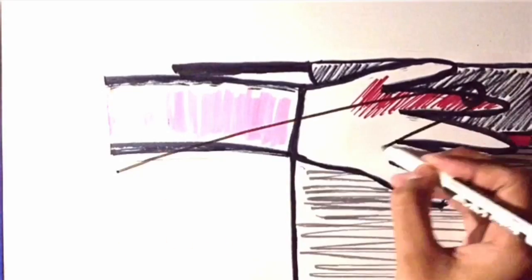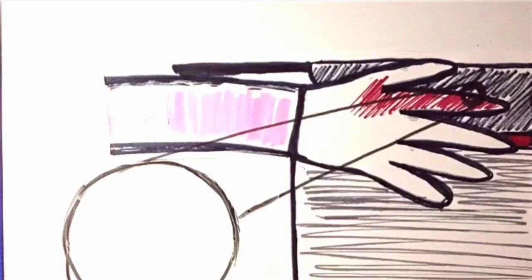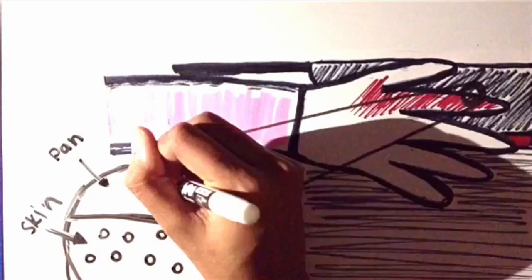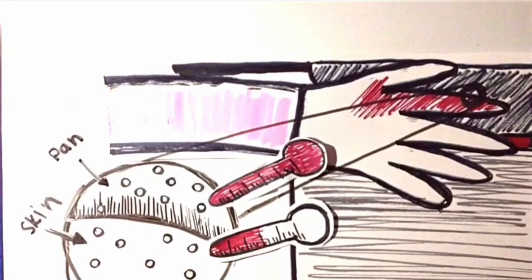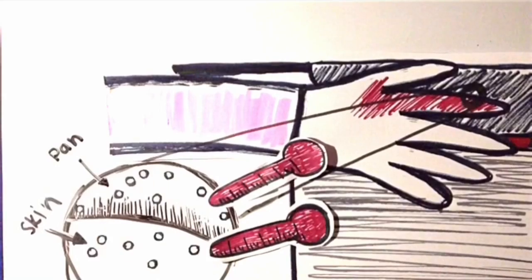Now that the heat is transferred to the pan, the thermal energy and temperature of the pan has increased. And when you touch the pan, the same thing occurs. Heat is quickly transferred to your hand and the thermal energy and temperature of your own hand increases.